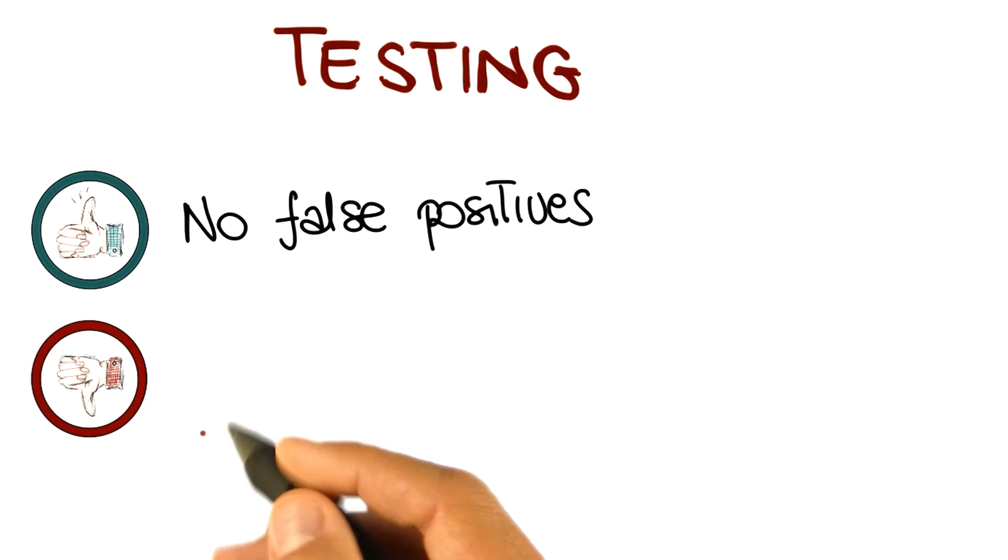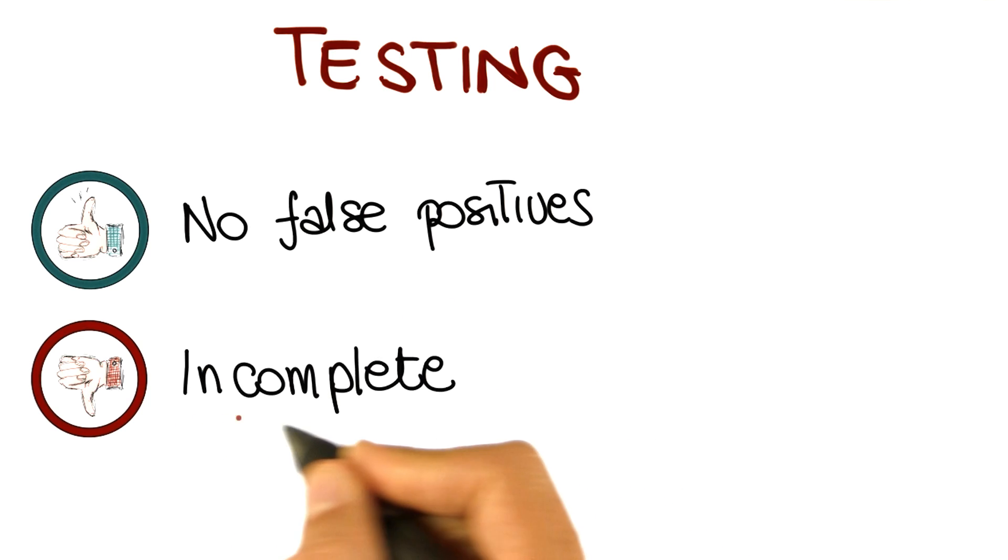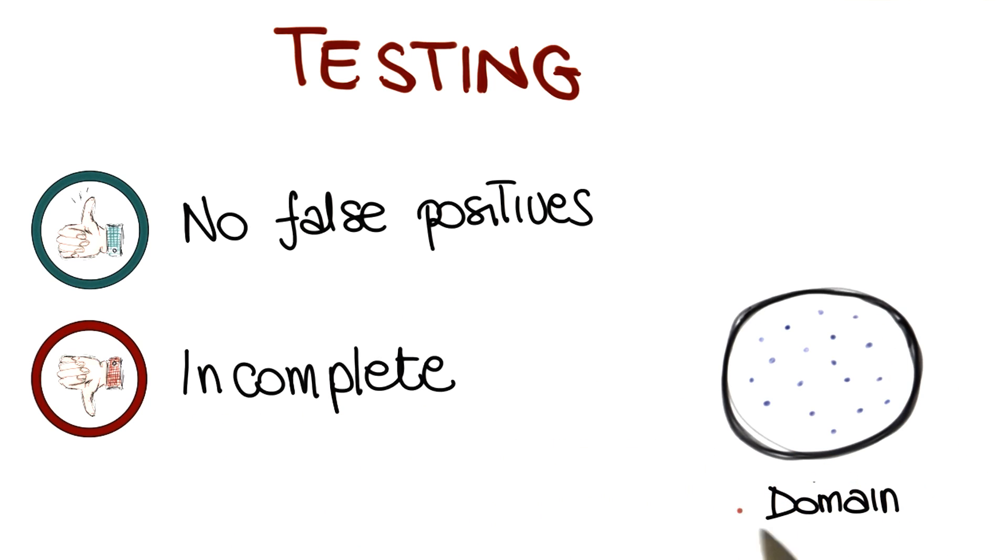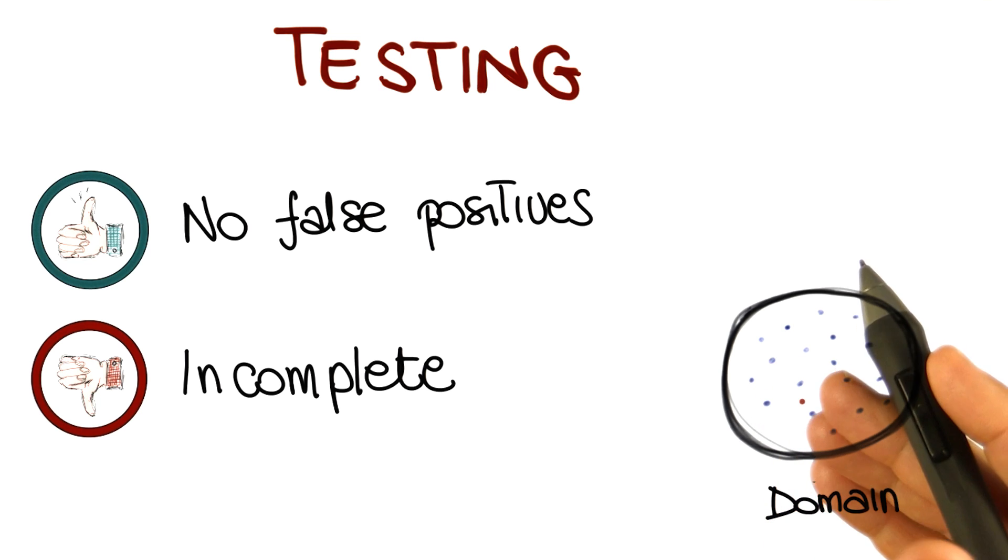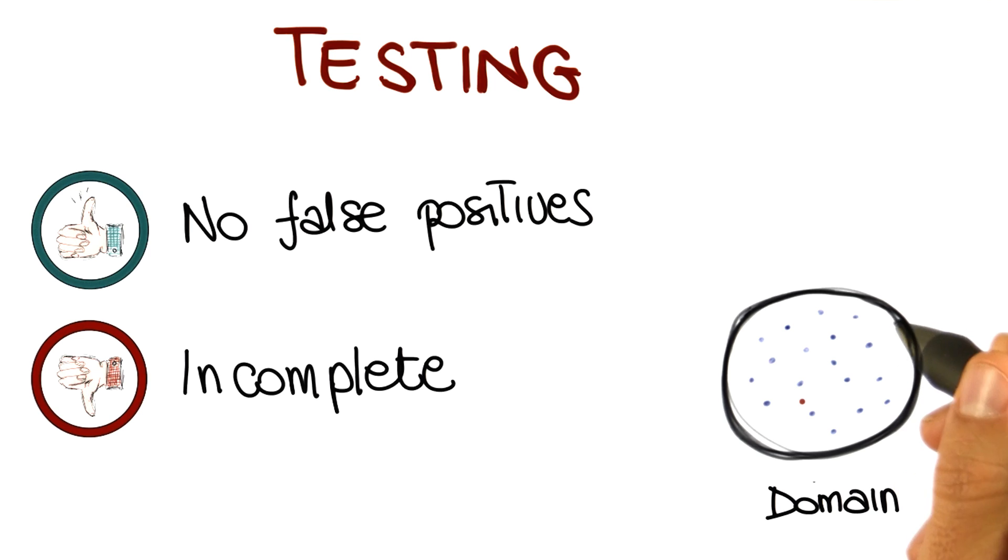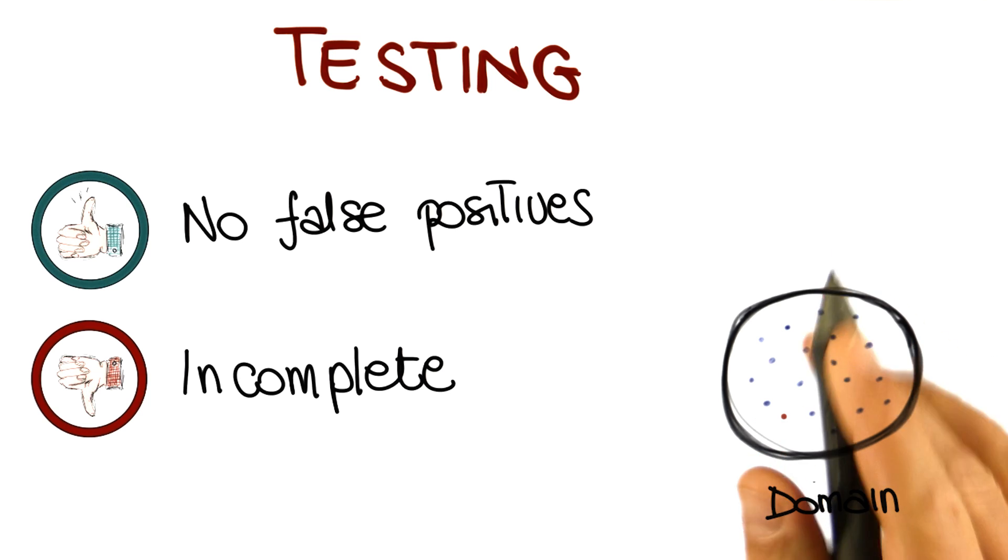The main limitation of testing, however, is that it is highly incomplete. Consider again the picture that we drew a little earlier, the one representing the input domain of the program being tested. Even in the best scenario, testing can consider only a tiny fraction of the program domain, and therefore, a tiny fraction of the program's behavior. And we'll say a lot more about that in the following lessons.